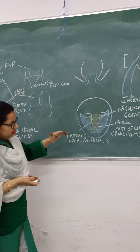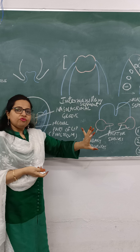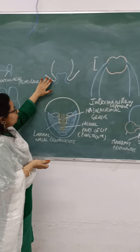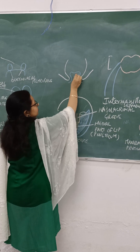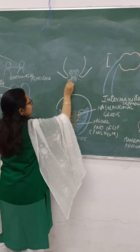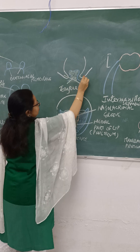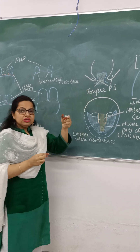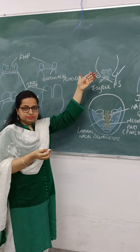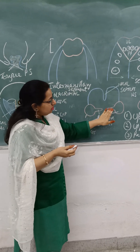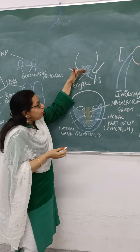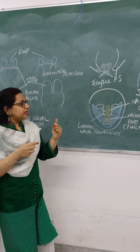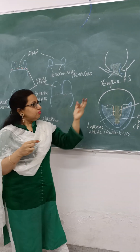The palatine shelves, which are responsible for the formation of the secondary palate, develop at the sixth week of intrauterine life and are initially directed obliquely downwards. At the seventh week of intrauterine life, these palatine shelves ascend up and become horizontal, and the tongue falls downward from between these two shelves.